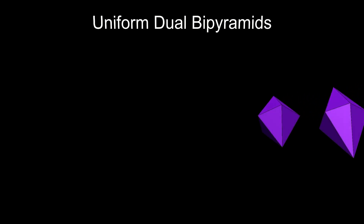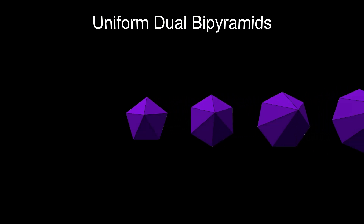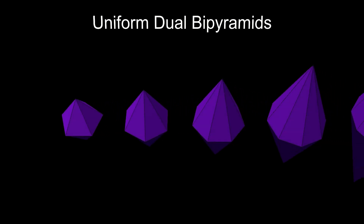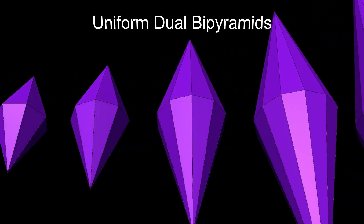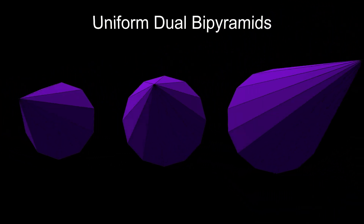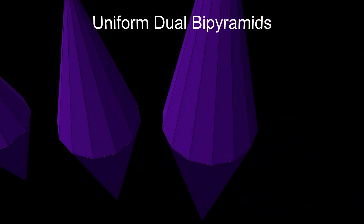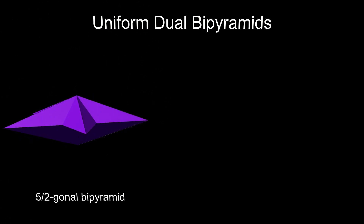The dual of a prism is a bipyramid. For a convex prism this is a simple convex bipyramid, which I've covered in an earlier video. But for a non-convex prism it's a bit more complicated, as the bipyramid will have intersecting faces.